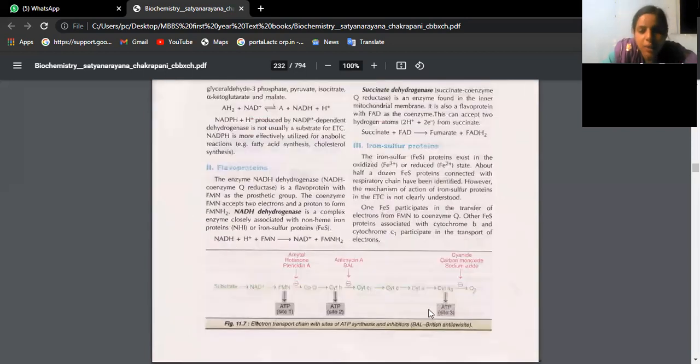So if we do not want ATP production, we can make use of inhibitors also. So inhibitors, we have amital, rotenone, pyricidin. Then we have antimycin, British anti-lewisite. We have cyanide, carbon monoxide, sodium azide. These are the inhibitors.